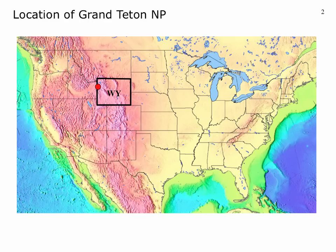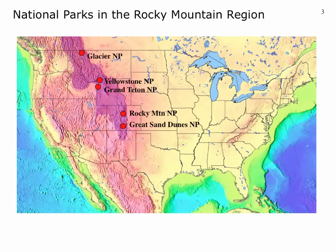Grand Teton National Park is located in Wyoming. It's very close to Yellowstone National Park, which is just a little bit to the north, and its geology is related to that of Yellowstone — we're going to see how later in this lecture. There are a number of national parks in the Rocky Mountain region, extending up into Canada. We've already looked at Yellowstone and Great Sand Dunes, so we will focus now on Grand Teton.